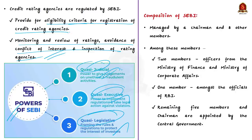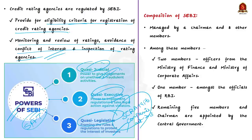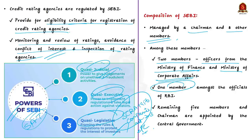Though these powers make SEBI very powerful, there is an appeal process to create accountability. There is a three-member tribunal called the Securities Appellate Tribunal to hear and dispose of appeals against orders passed by SEBI, and a second appeal lies directly to the Supreme Court. SEBI also exercises powers conferred under other acts such as the Securities Contracts Regulation Act 1956, Depositories Act 1996, and the Companies Act 2013. As per the SEBI Act 1992, it is managed by a chairman and eight other members — two officers from the Ministry of Finance and Ministry of Corporate Affairs, one official of RBI, and the remaining five members and the chairman are appointed by the central government.